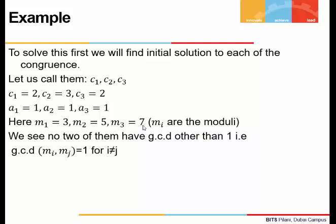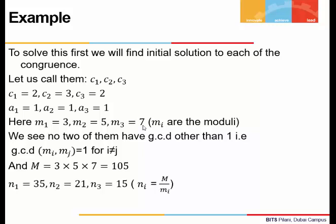We have already seen all of them are pairwise relatively prime. Capital M is nothing but the product of all three moduli, 3 × 5 × 7, which is 105.